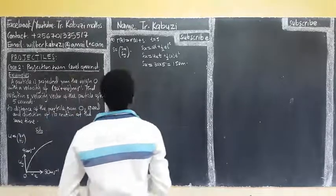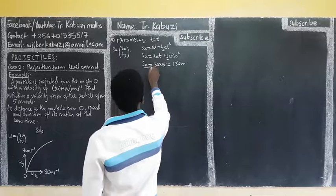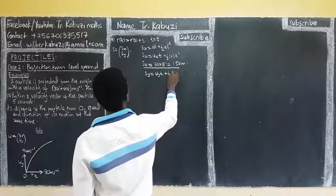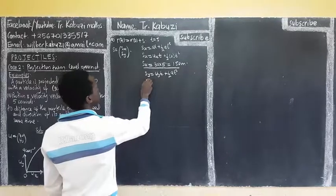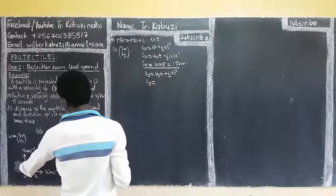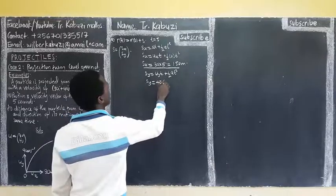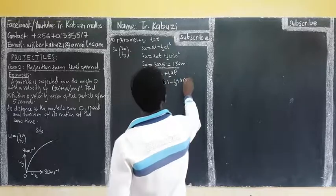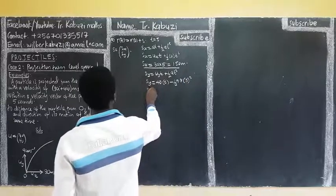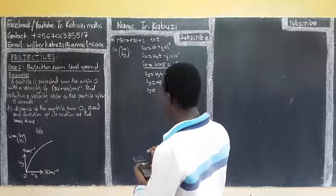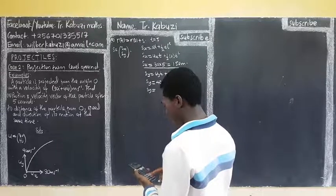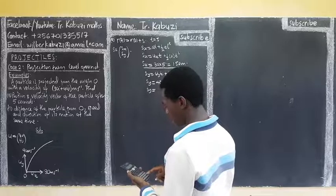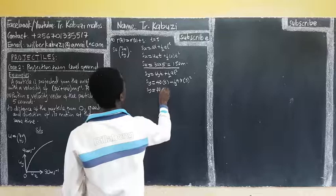Then I come and get also my sy. My sy is given by uy·t plus a half·a·t squared. So my sy — my uy starts here — it's going to be 40 times t, which is 5, then minus a half of 9.8 into 5 the whole squared. So our sy here is going to be — using 9.8 as gravity — 200 minus something, giving us 77.5 meters.